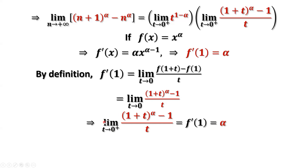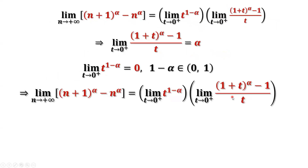Now we are ready to conclude. The first limit is zero, the second limit is alpha, and zero times alpha is zero. This is the answer. Thanks for watching, and see you next time.